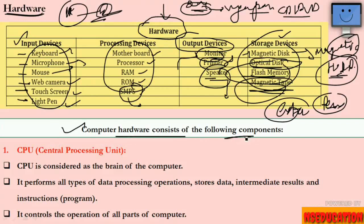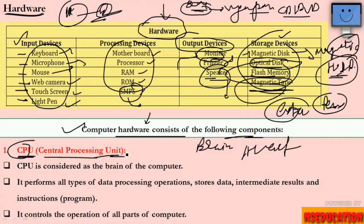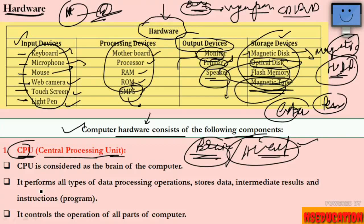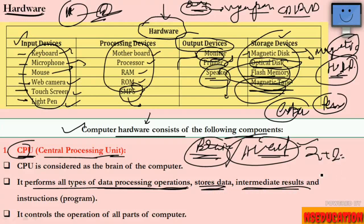Now let's talk about computer hardware components. The most important component — the brain of the computer system or heart of the computer system — is the CPU, which stands for Central Processing Unit. It is the brain of the computer, without which nothing is possible. Its job is to perform all types of data processing operations, store data, and handle intermediate results.